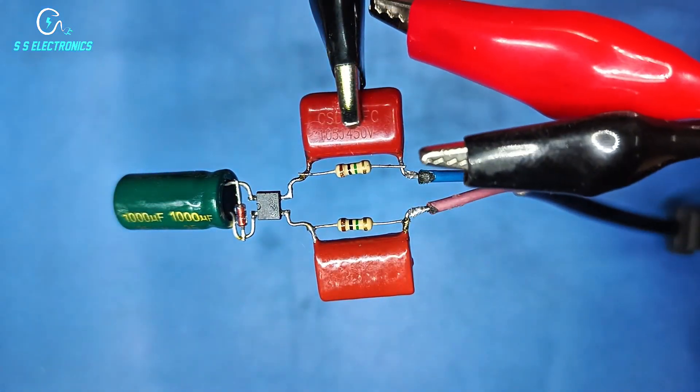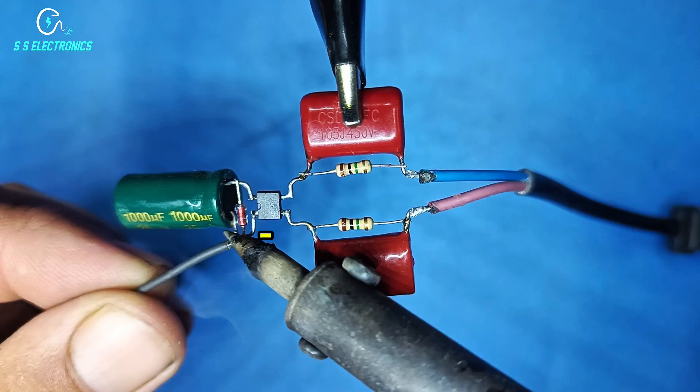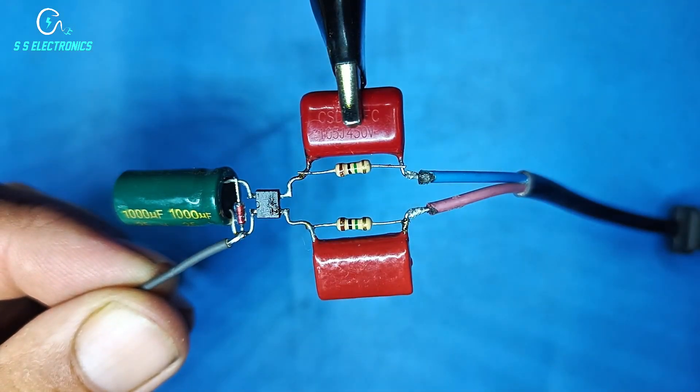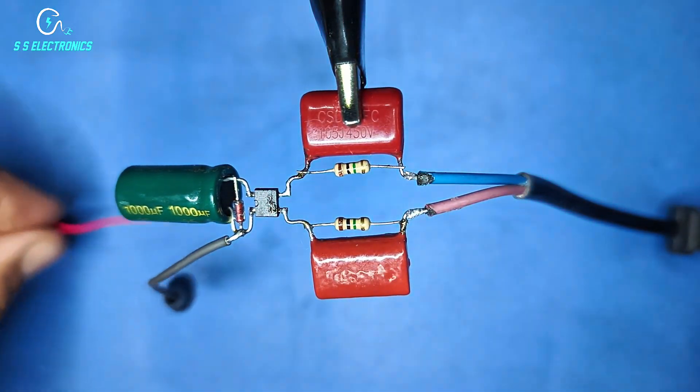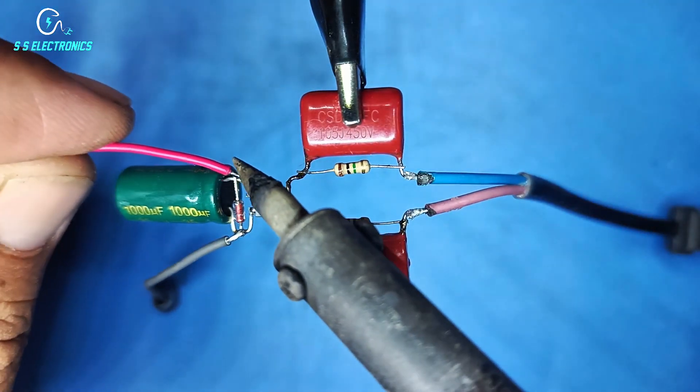Capacitor output wire. Output negative wire connecting with capacitor negative side. Output positive wire connecting with capacitor positive side.